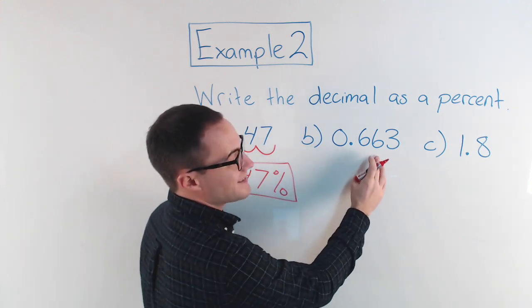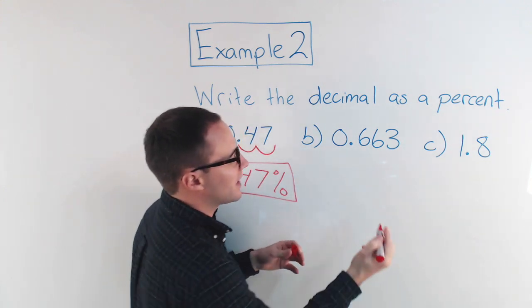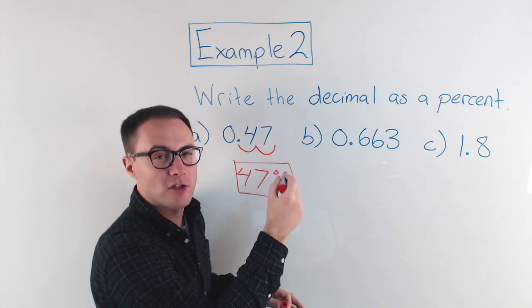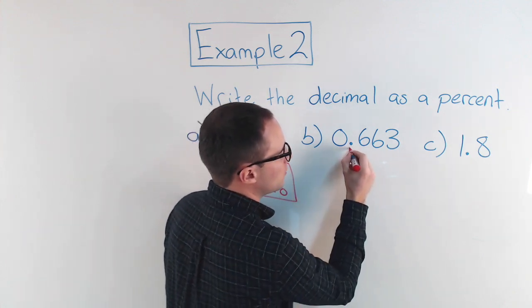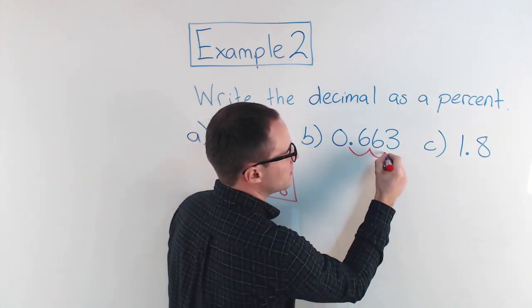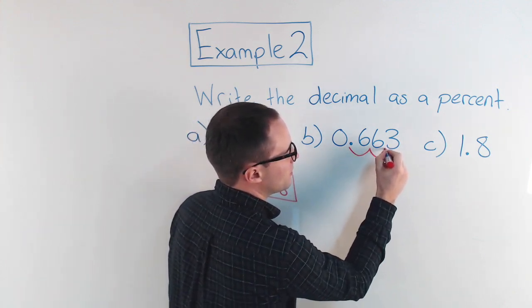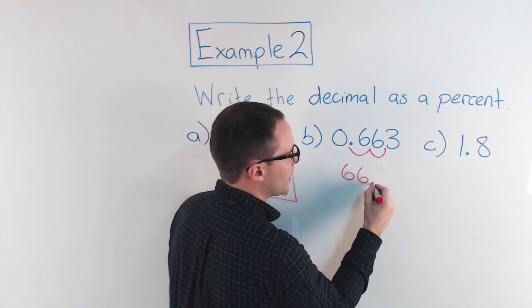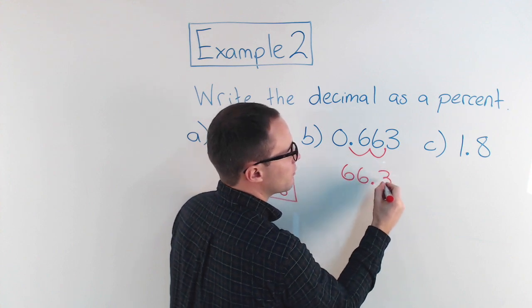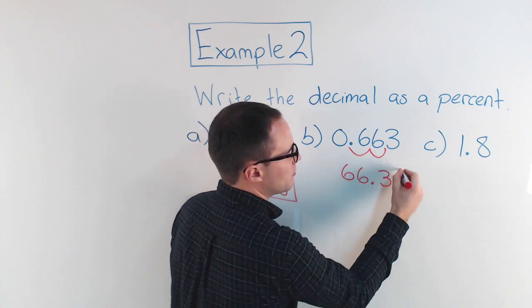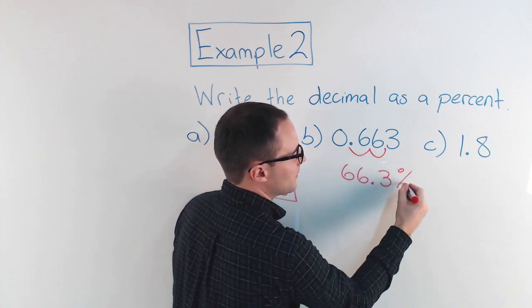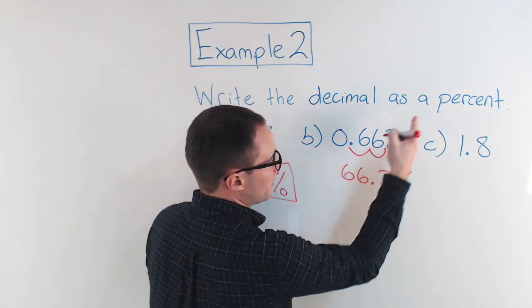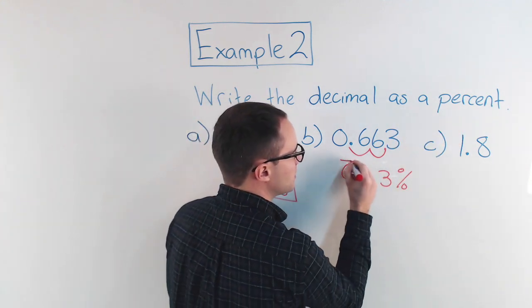For 0.663 as a percent, I take the decimal point and move it twice to the right: one, two — so it becomes 66.3 percent. Make sure you add your percent symbol at the end, since we're changing them to percents.